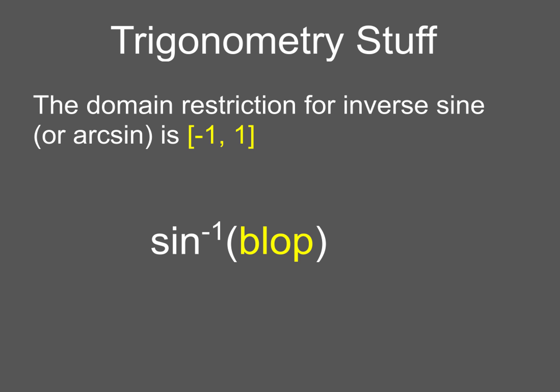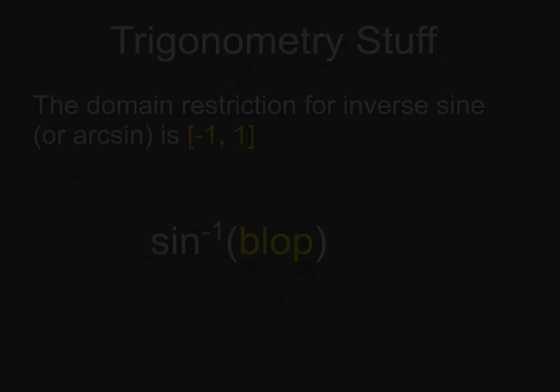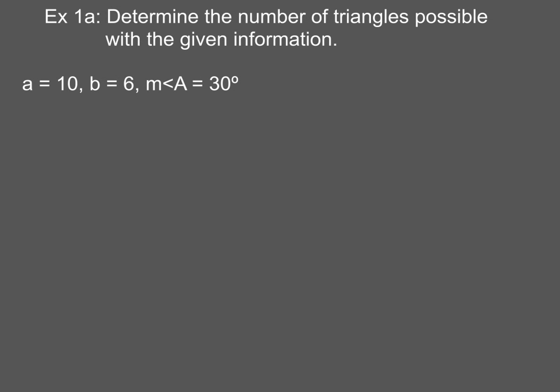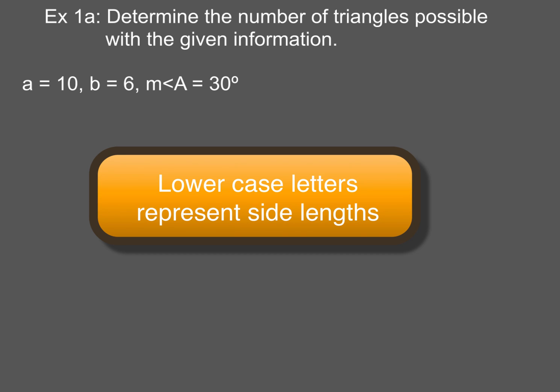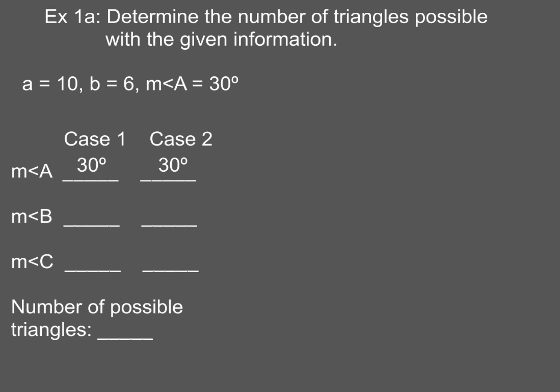But enough of that. Let's go ahead and take a look at example number 1. So here we are. We've got to determine the number of triangles possible with the given information. Now a is 10, b is 6, and the measure of angle A equals 30 degrees. And a lot of times in textbooks the lowercase letters will represent the side length.